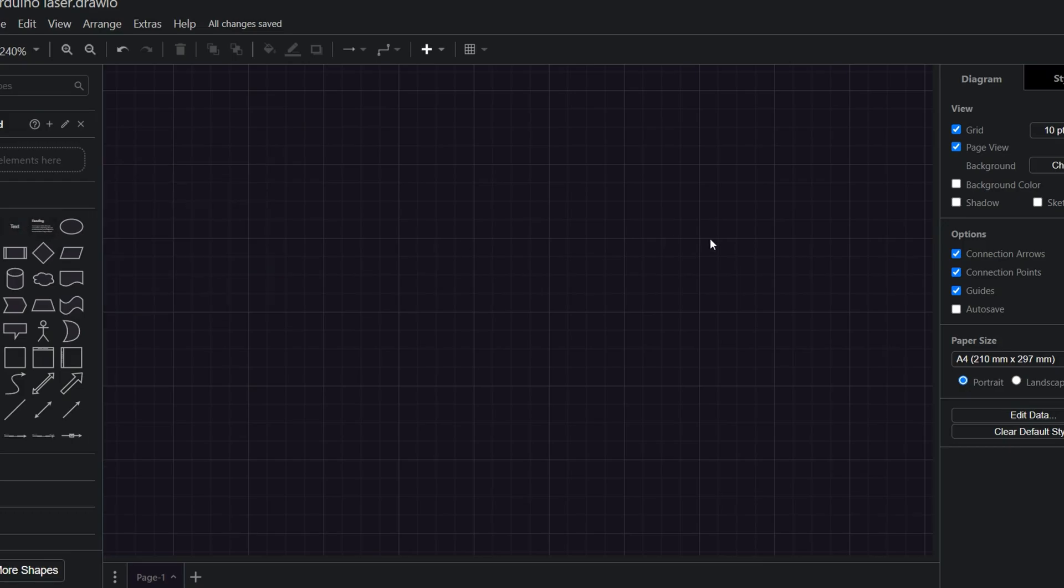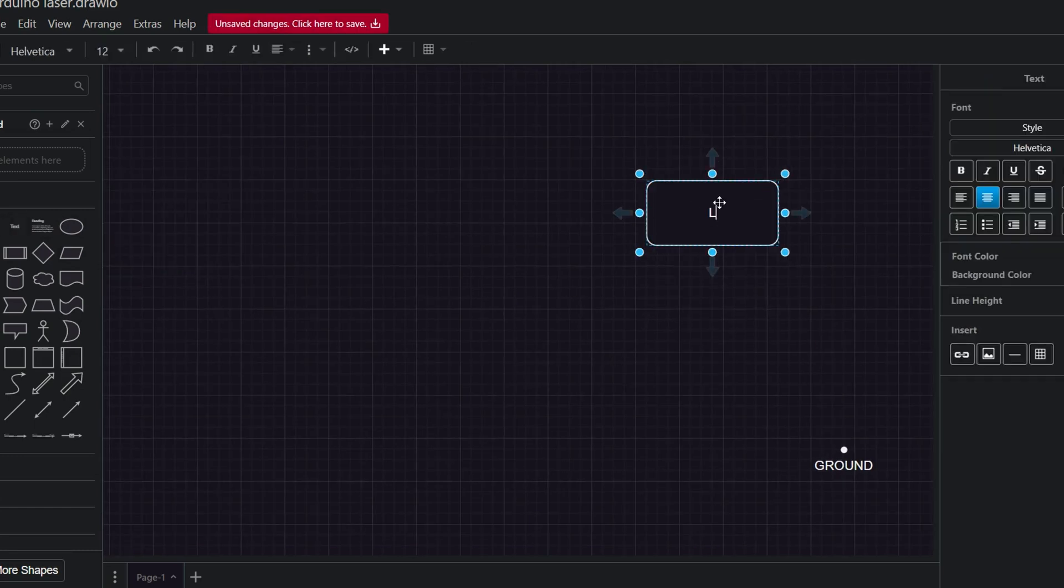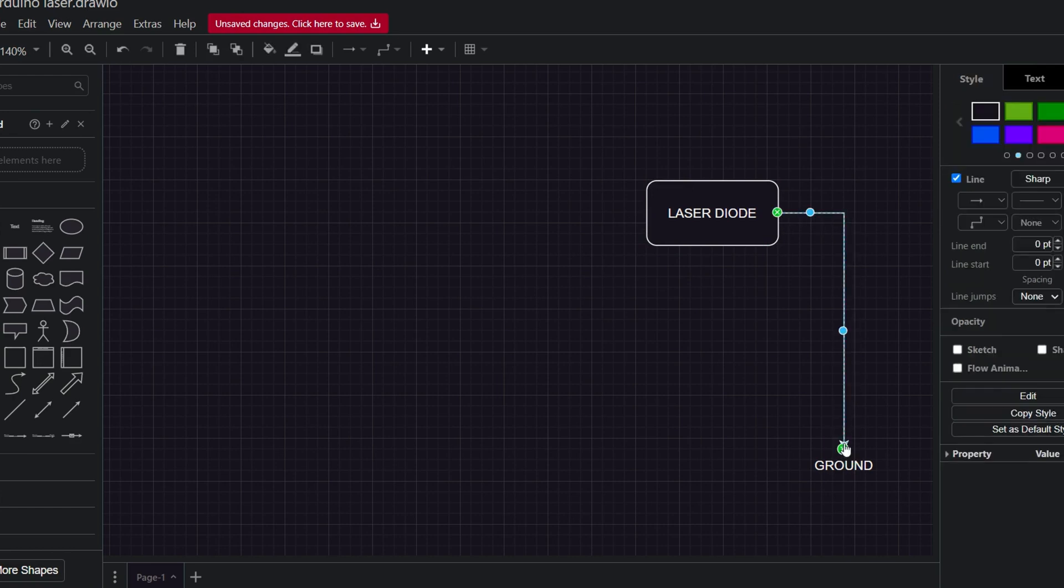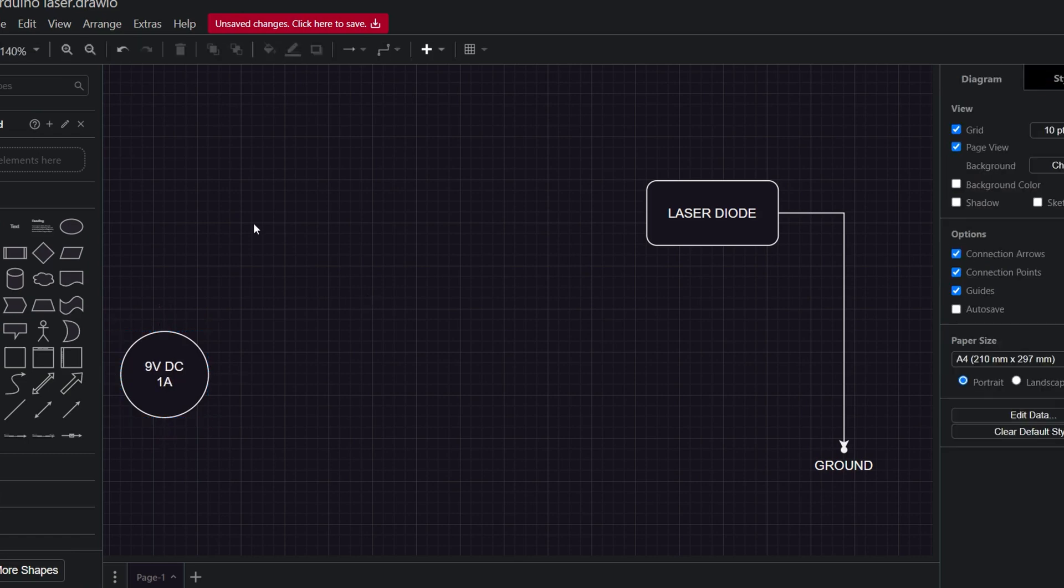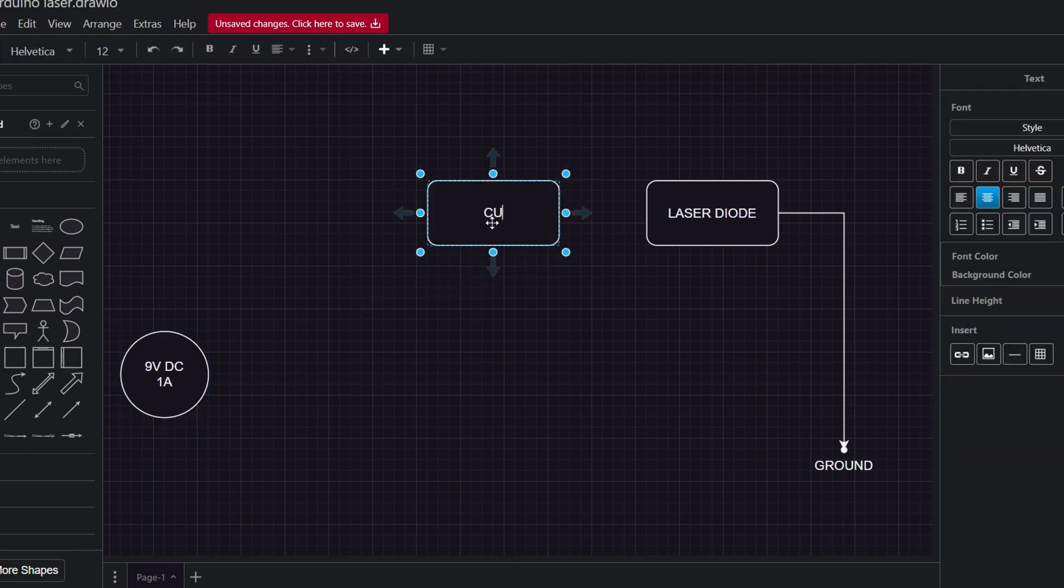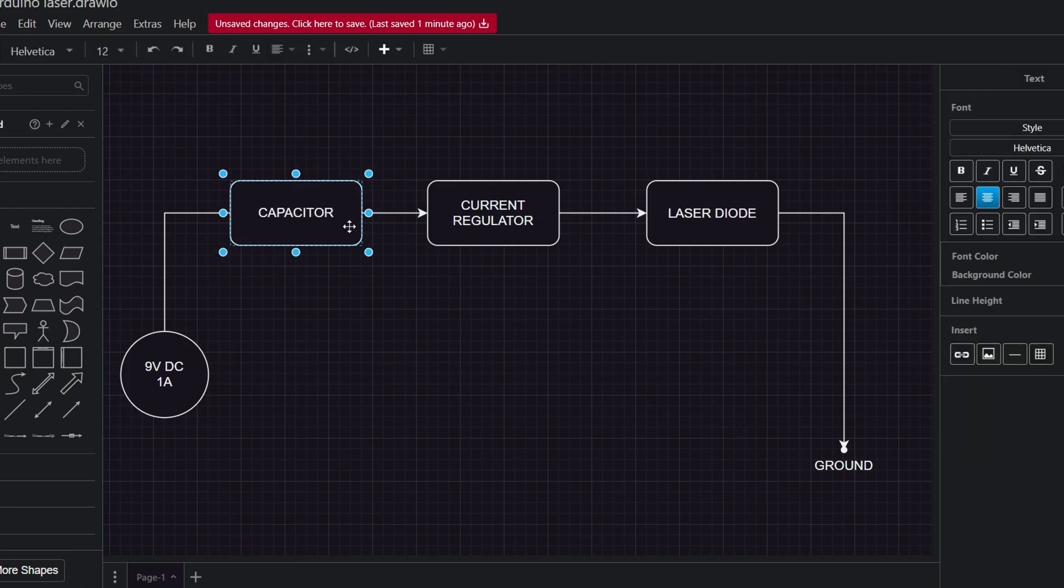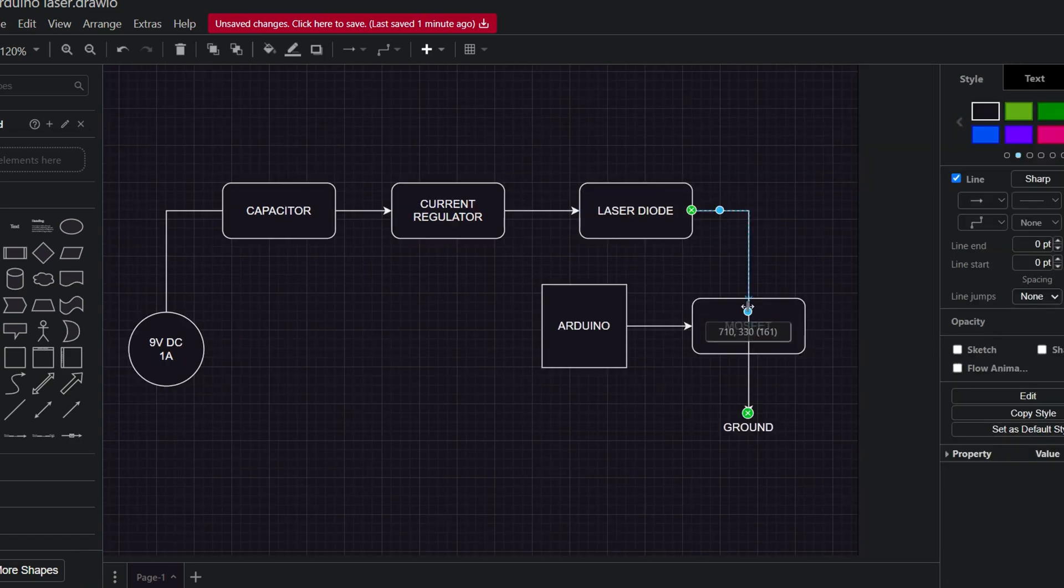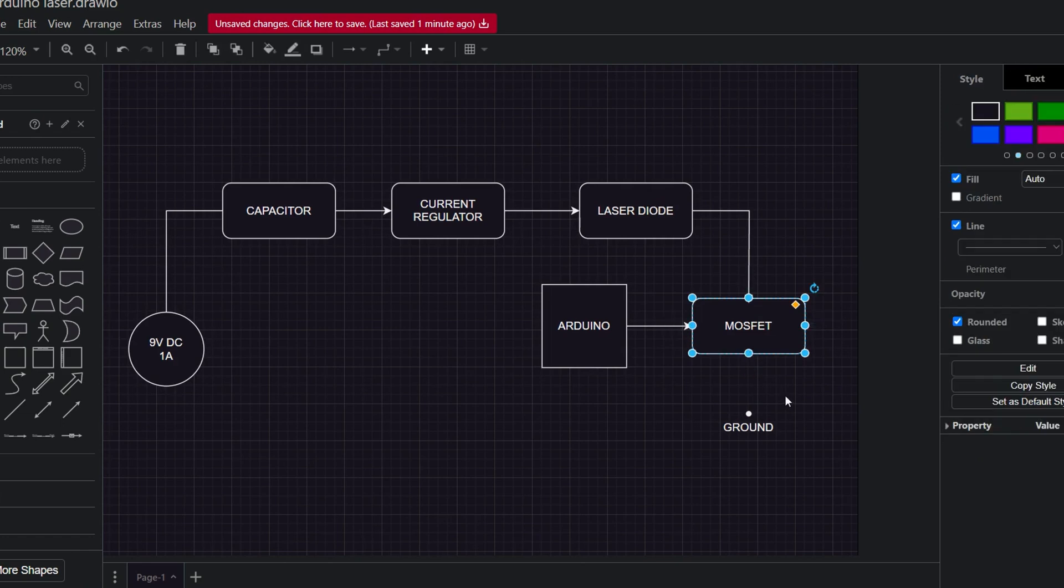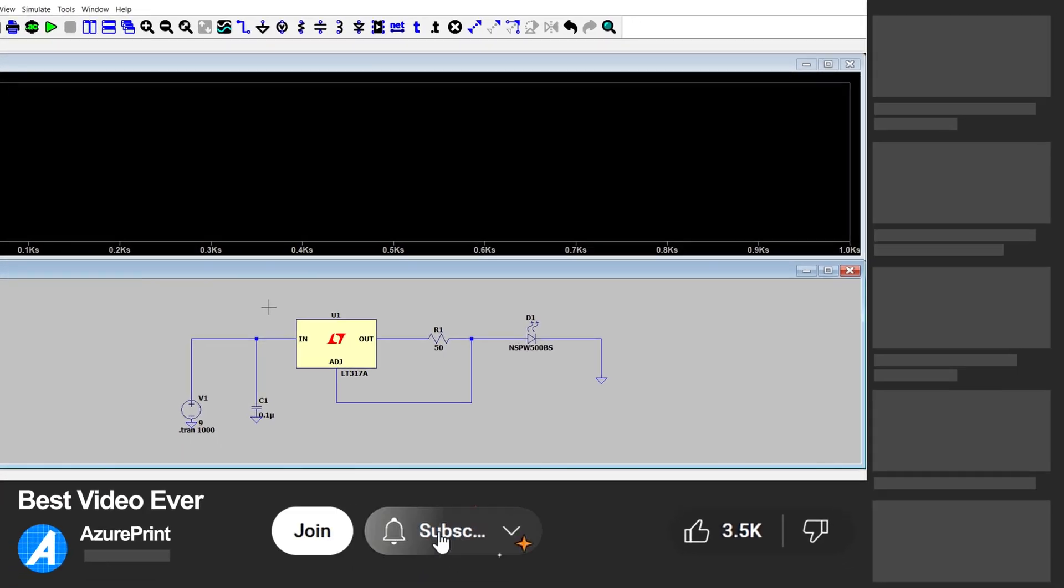First it is good to know what do we even want to do. To visualize it I'm going to use a block diagram. We need to power a laser diode so power goes in and out to the ground. As a power source I'm going to use 9 volts 1 ampere DC adapter with a barrel jack. And between those two we need something that will regulate current from source to a laser diode. Add a capacitor at the beginning to eliminate spikes when connecting and disconnecting power. And that would be all that we need for a simple laser diode driver.